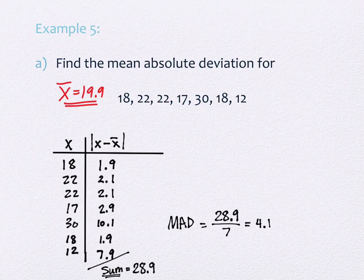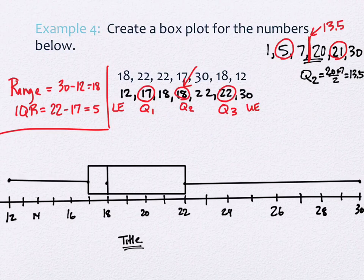The mean absolute deviation is 4.1, which means on average the values are spread about 4.1 away from the mean of 19.9. If you went 4 away from 19.9 in either direction on the box plot, you'd capture most of the values.